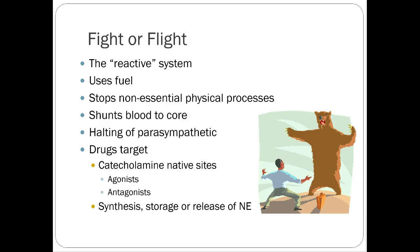By stopping non-essential processes and using fuel, you're essentially halting the parasympathetic nervous system — that's why you have a functional antagonistic effect. Our drugs basically target the native sites of catecholamines, which is just a fancy word for things that stimulate the system. The primary catecholamines are norepinephrine, dopamine, and epinephrine. There are also a couple of other drugs that mimic catecholamine response.